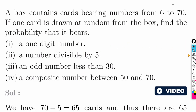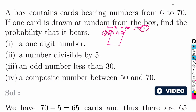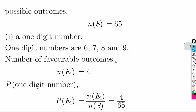Next question: a box contains cards bearing numbers from 6 to 70. One card is drawn at random. Total cards = 70 - 5 = 65. Find probability of a one-digit number: one-digit numbers from 6 to 9 are 6, 7, 8, 9 — that is 4 numbers. Answer: 4 by 65.